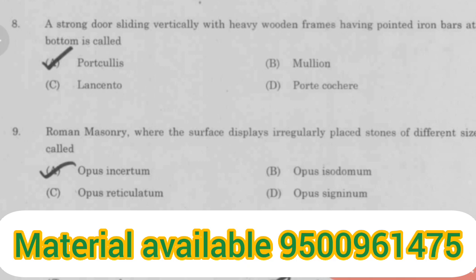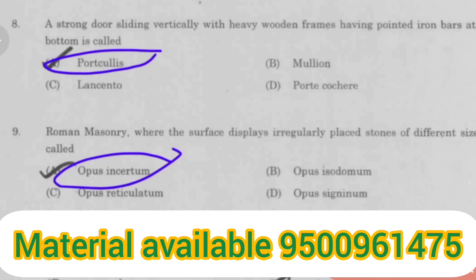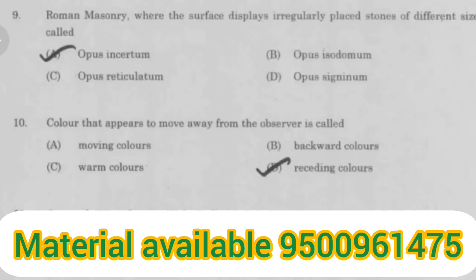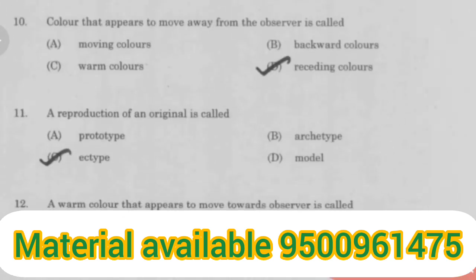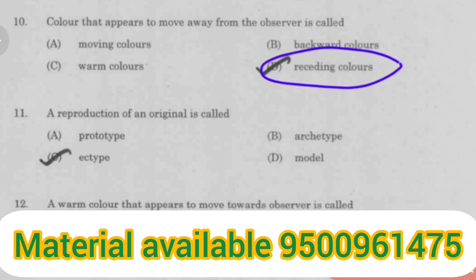A strong door sliding vertically with heavy wooden frames having pointed iron bars at the bottom is called a portcullis. Roman masonry where the surface displays regularly placed stones of different sizes is called Opus Insertum. Color that appears to move away from the observer is called receding color.